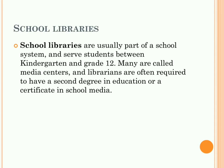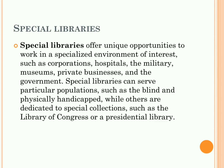We will discuss about special libraries. A special library provides specialized information and resources on a particular subject or area. Special libraries include corporate libraries, law libraries, medical libraries, museum libraries, hospitals, etc. For example, a library for differently abled blind people is situated at Dehradun.